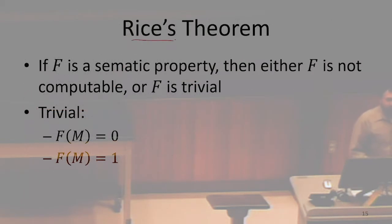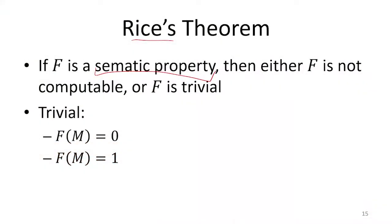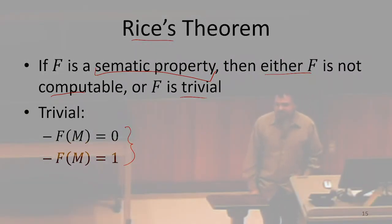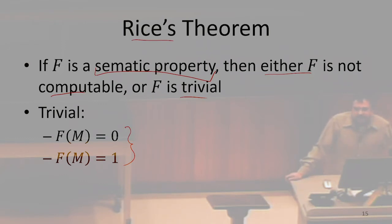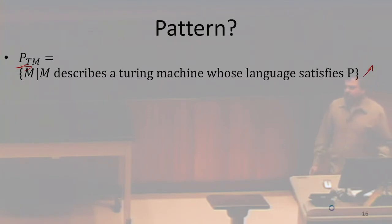Rice's Theorem says every semantic property of Turing machines is not computable, except for two — exactly two. The way it's phrased is: either that semantic property is not computable, or else it's trivial. The two exceptions are the trivial ones, which apply to no Turing machines or apply to all Turing machines. If you ask a question about the language of a Turing machine, either the answer is always yes, always no, or you couldn't tell — it's undecidable. Those are the only three situations.